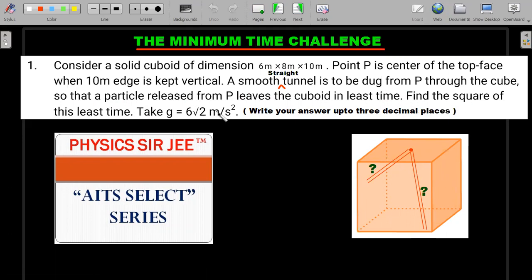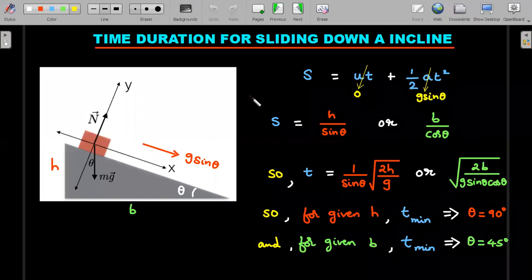The tunnel should be straight. The least possible time is the condition. Find the square of this least possible time taking the value of g as 6√2 m/s². In this particular scenario, you need to write your answer up to three decimal places, in SI units.